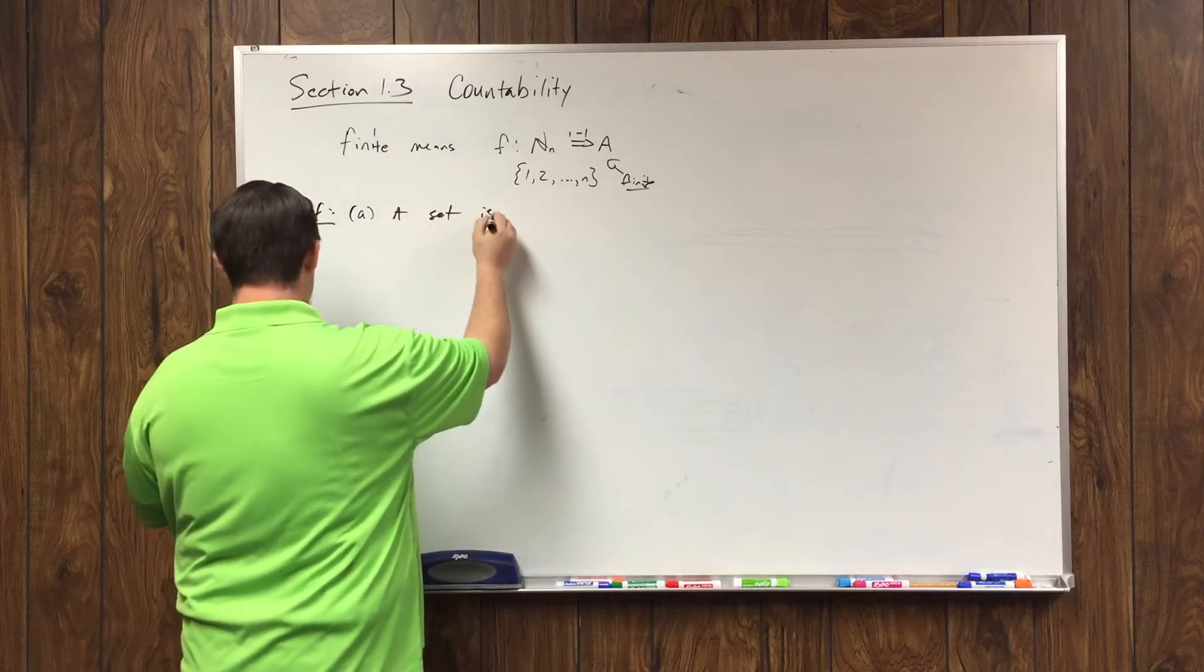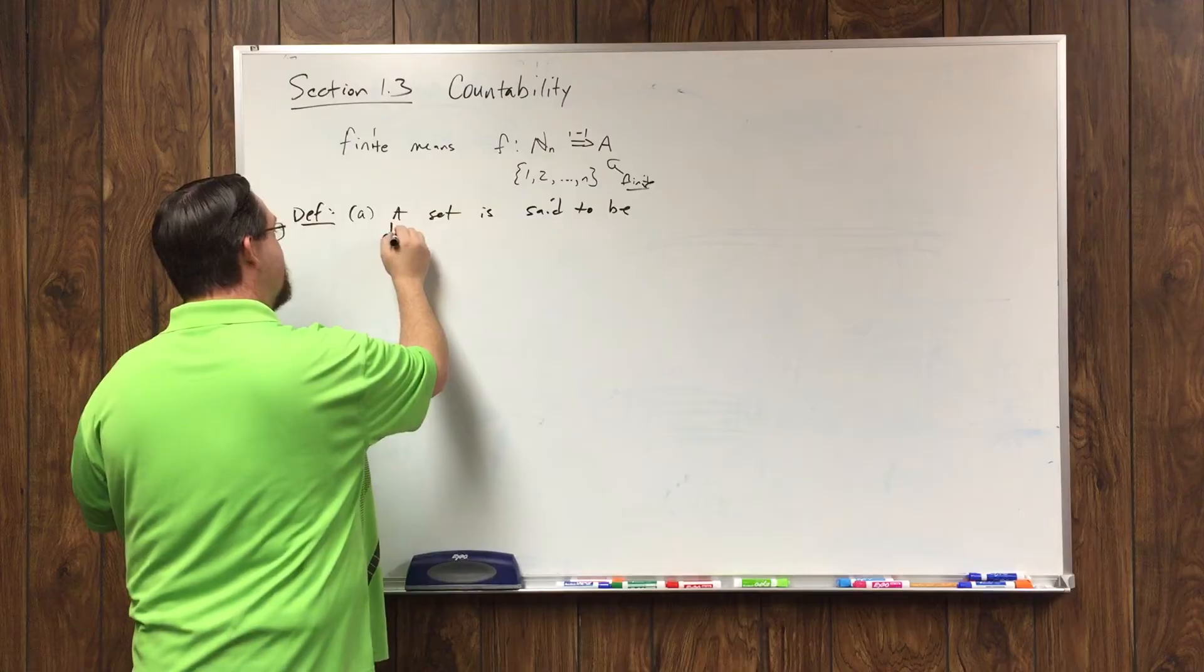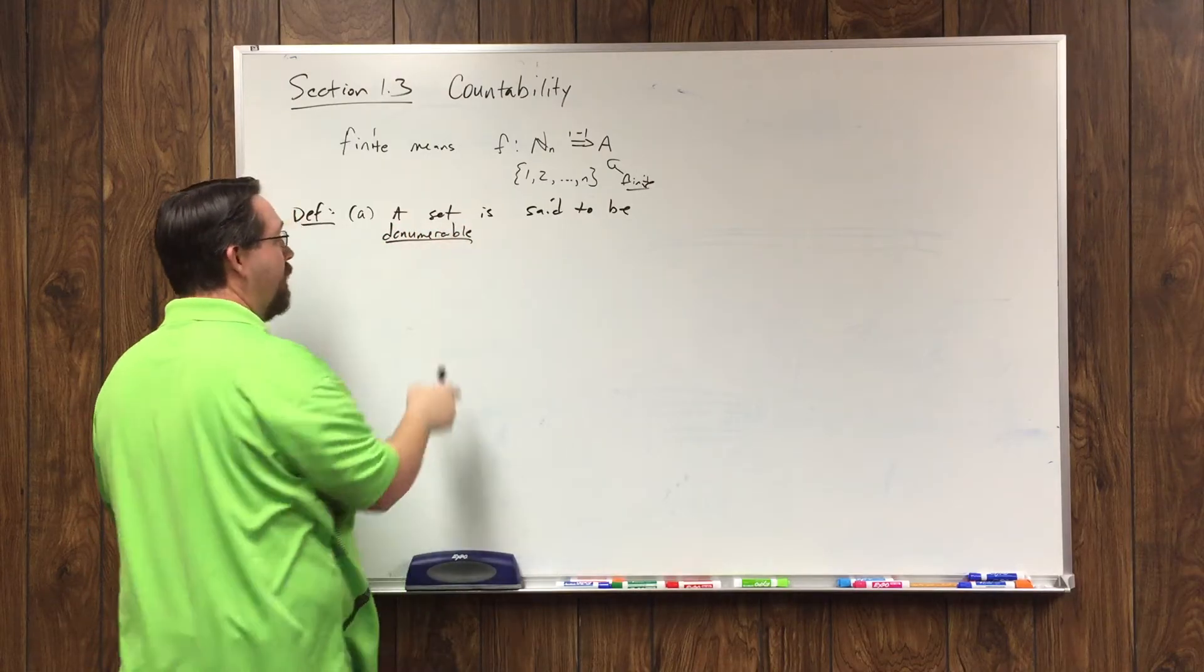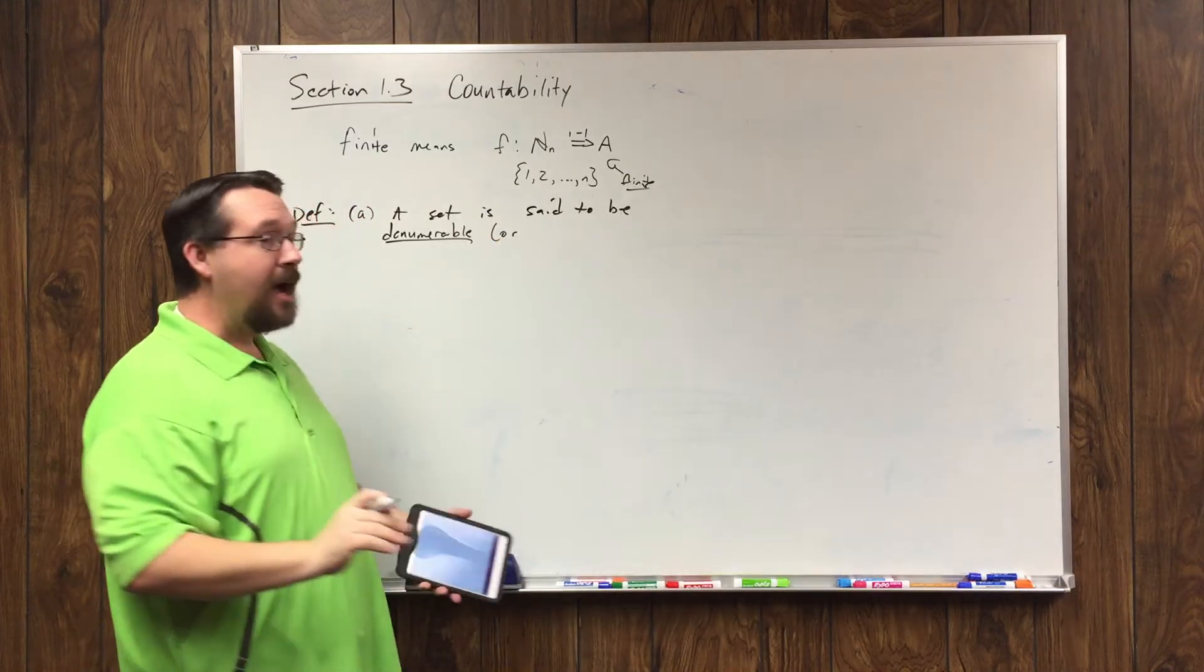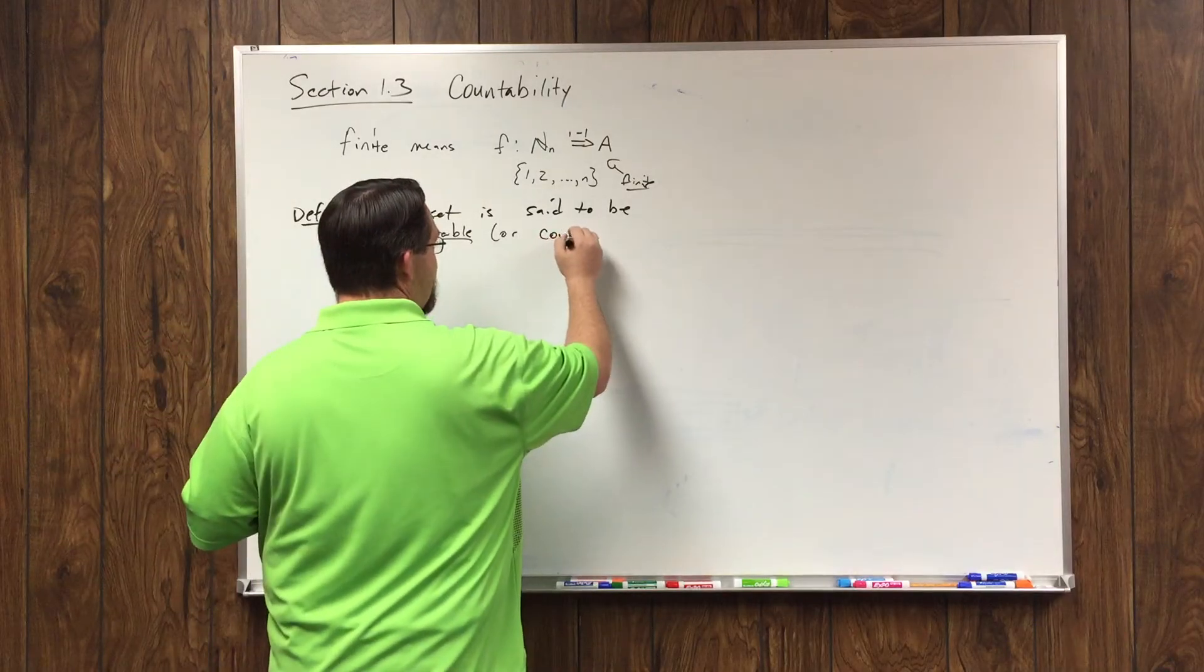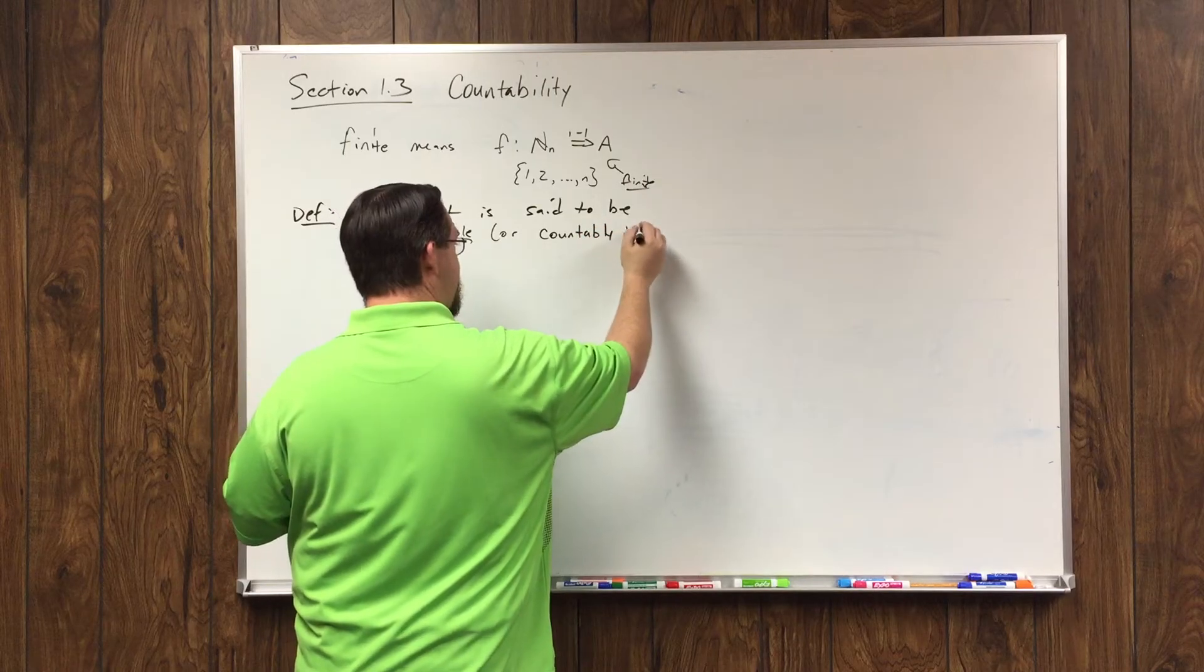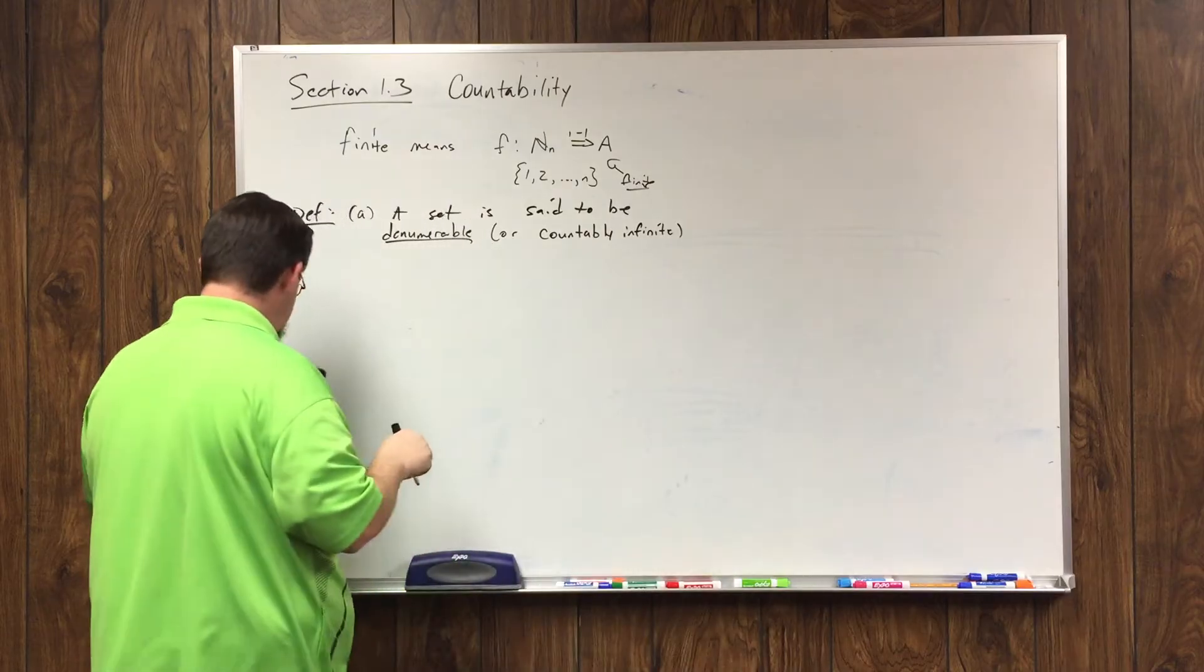First of all, I want to define something called denumerable. A set is said to be denumerable, D-E-N-U-M-E-R-A-B-L-E. Or, and this is the language or terminology I will probably use more often, but the book uses denumerable, so I want you to be familiar with it. I will refer to something as countably infinite.